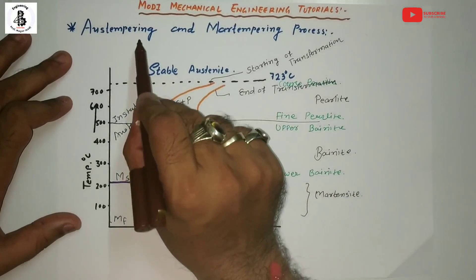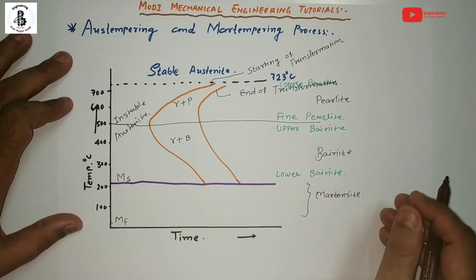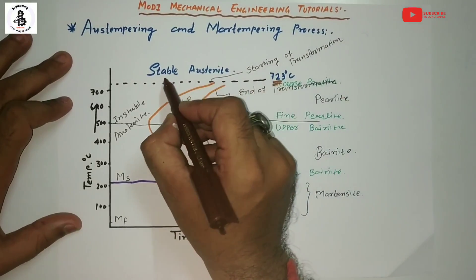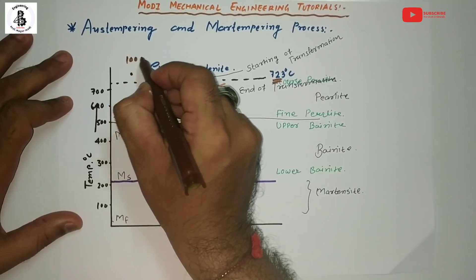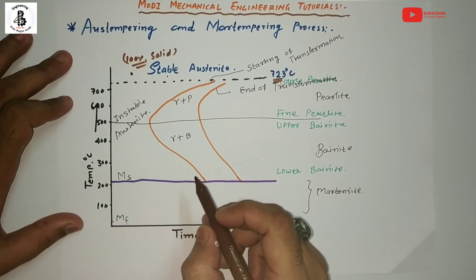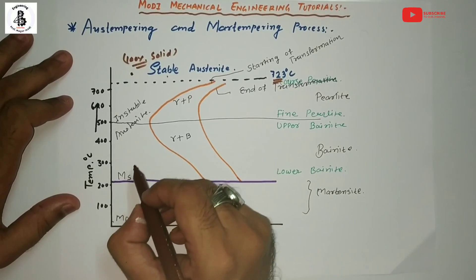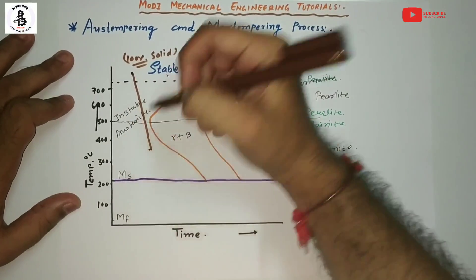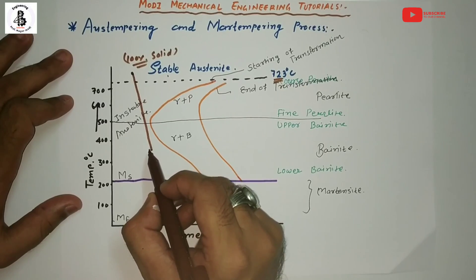Now we will focus on the austempering and martempering processes. Austempering is a special type of heat treatment process in which the steel is heated above 723 degrees centigrade, giving 100 percent solid stable austenite. Then it is suddenly quenched into a salt bath at around 250 to 450 degrees centigrade — around 350 degrees centigrade — so from above 723 down to around 350 degrees with rapid quenching using a salt bath.